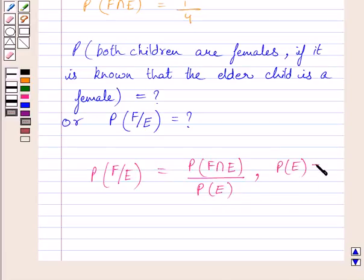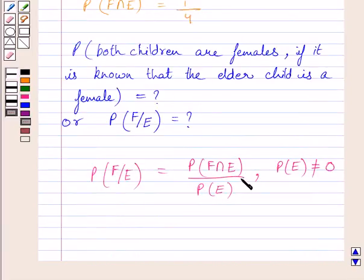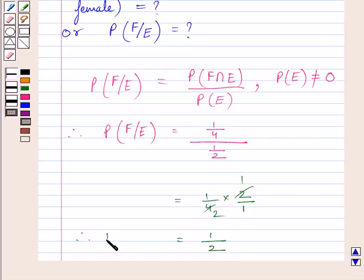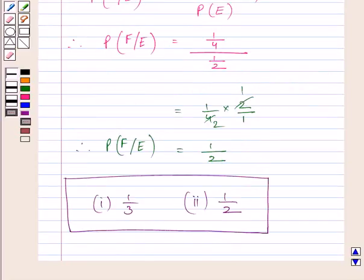Where probability of event E is not equal to 0. We know probability of event T is equal to 1 upon 2, and probability of F intersection E is equal to 1 upon 4. Substituting these two values, we get probability of event F when E has occurred is equal to (1 upon 4) upon (1 upon 2), which simplifies to 1 upon 2. So, probability of event F when E has occurred is equal to 1 upon 2. This is our required answer for the second part. This completes the session. Hope you understood the solution. Take care and have a nice day.